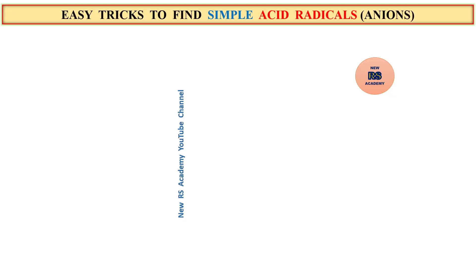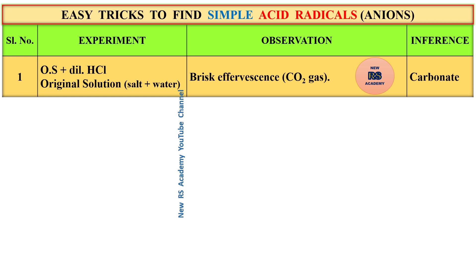This is an easy trick to find simple acid radicals. For each test we have Experiment, Observation, and Inference. Number one experiment: take the original solution, that means salt plus water. Add dilute acid. If effervescence is observed, that means CO2 gas is produced — you can identify that is carbonate.